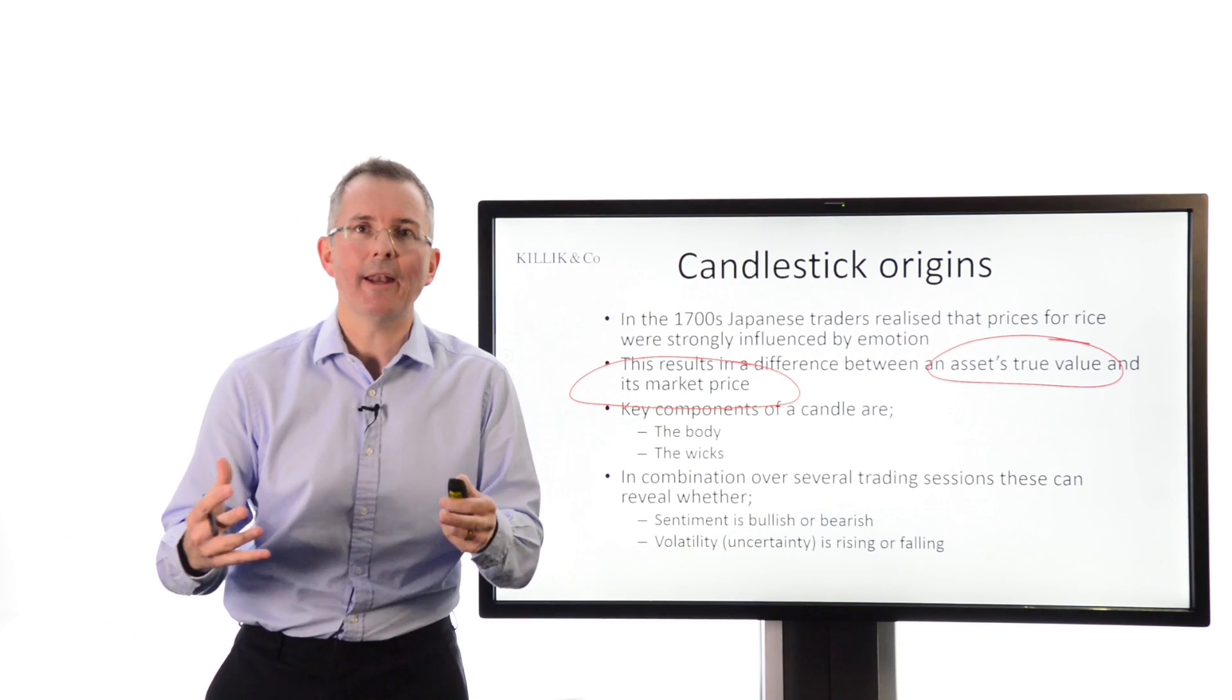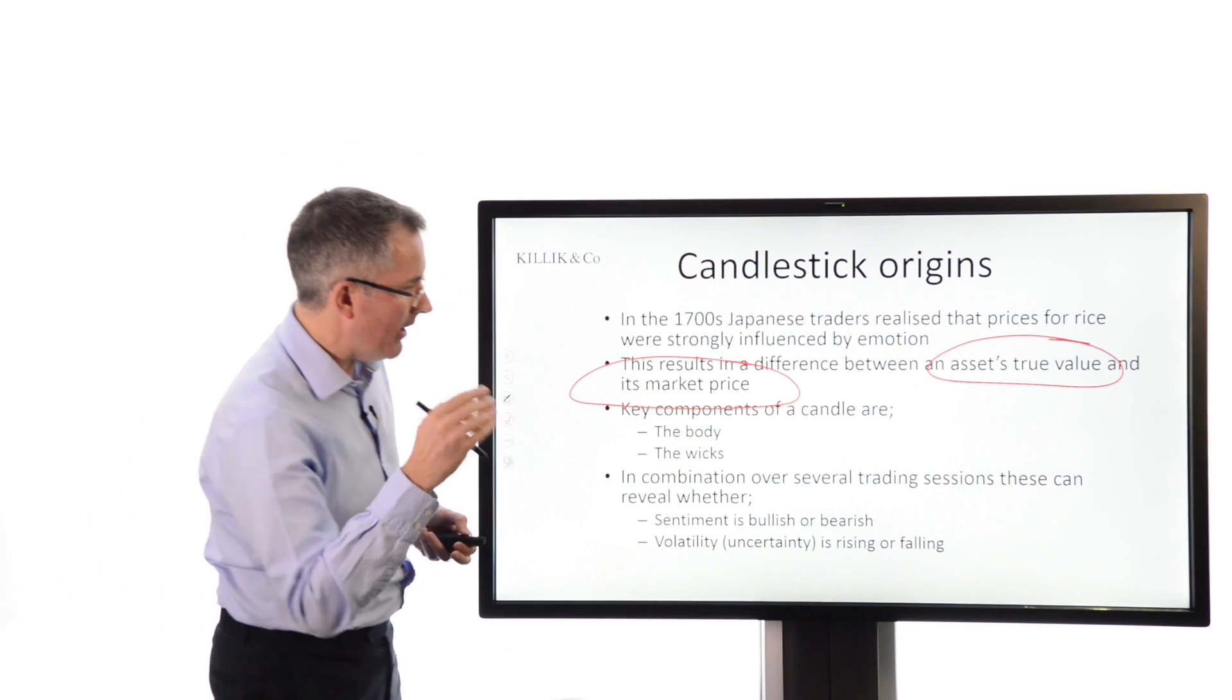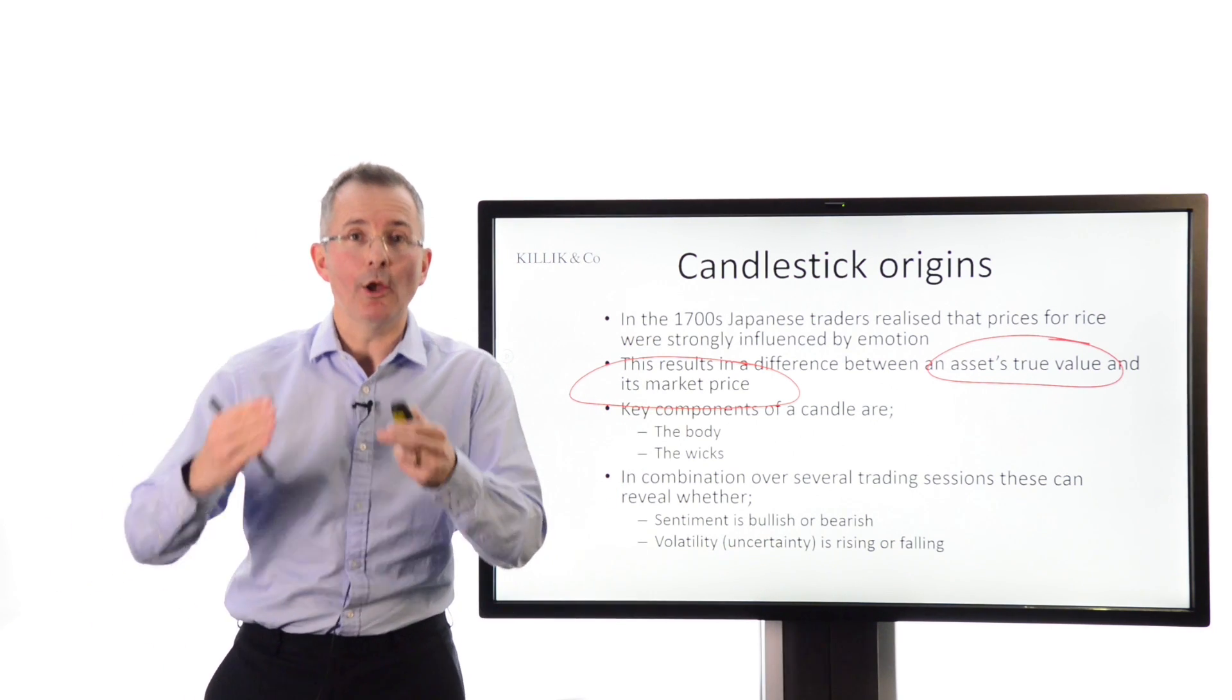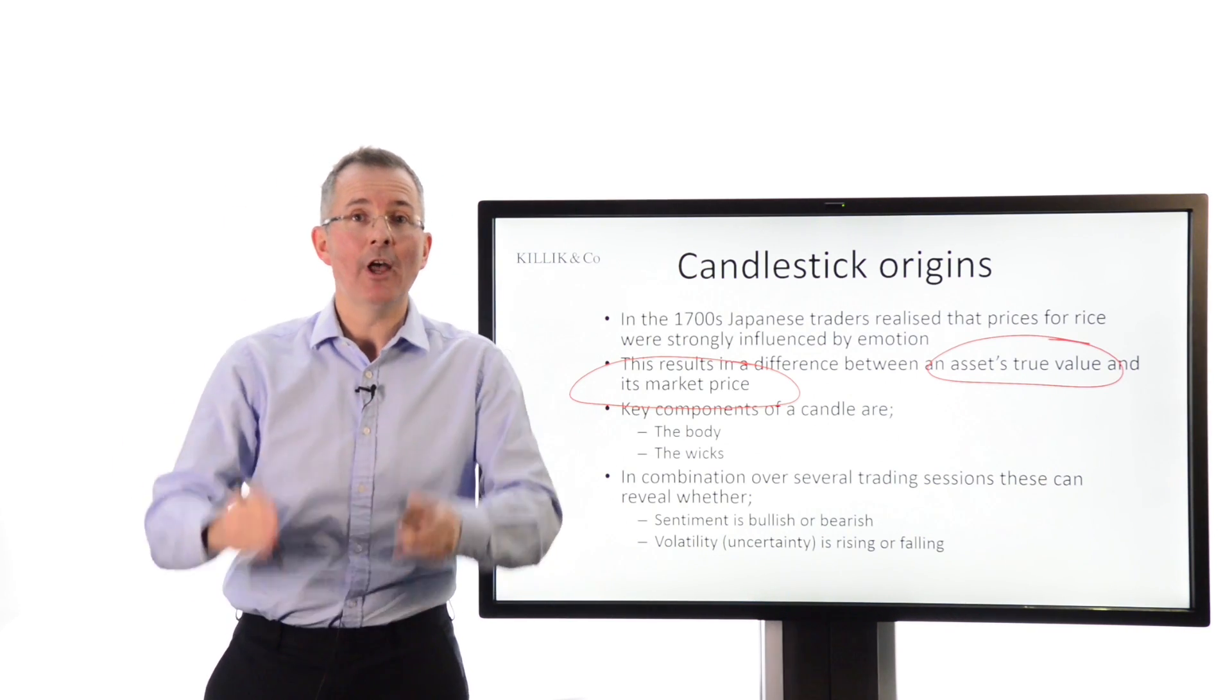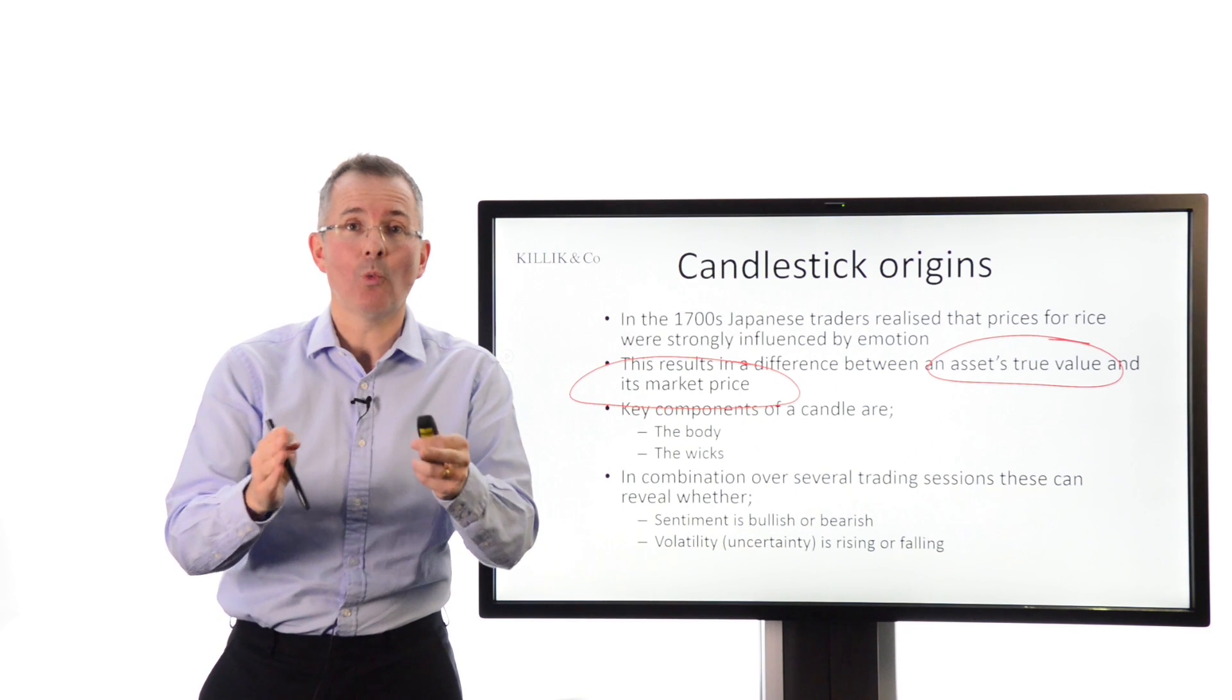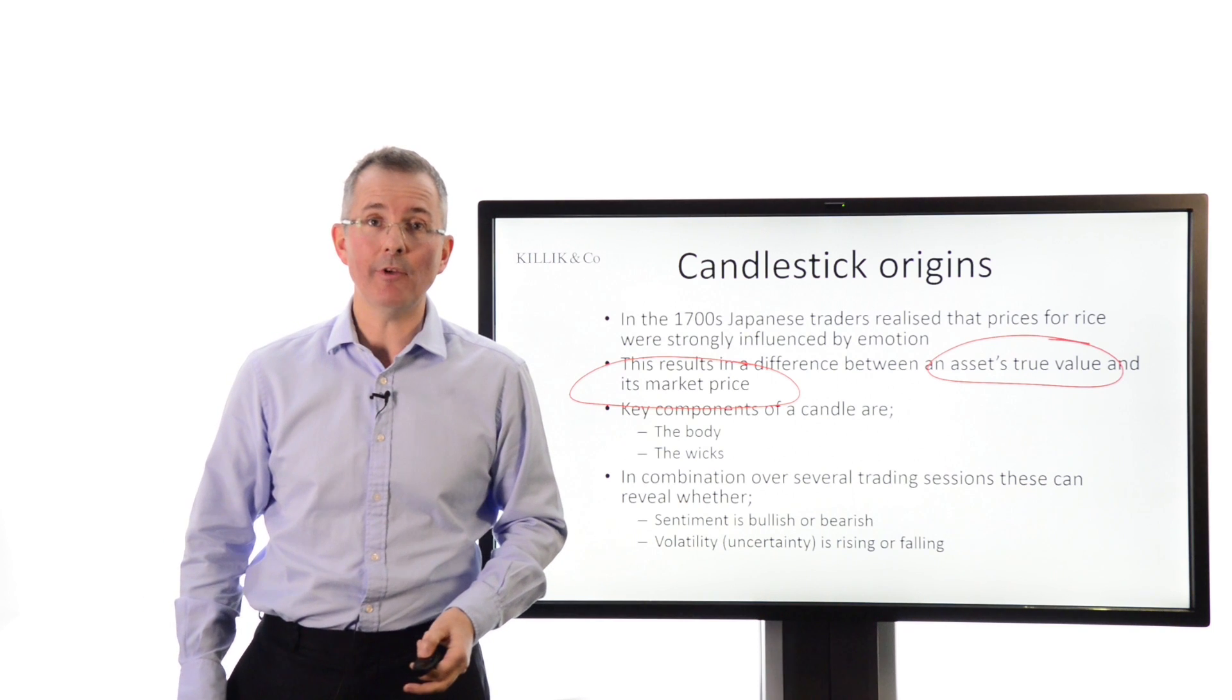So what they came up with was this idea of a candle, and you'll see it's pretty obvious why it's called that in a moment. It has a body and it has wicks that often stick out the top and the bottom. And the idea is that this gives you data about closing prices, opening prices, and also session highs and lows all in one place. And from there, you can do quite sophisticated interpretation of what might be happening to the stock and trying to work out what might happen next.